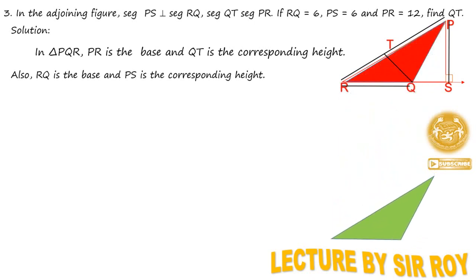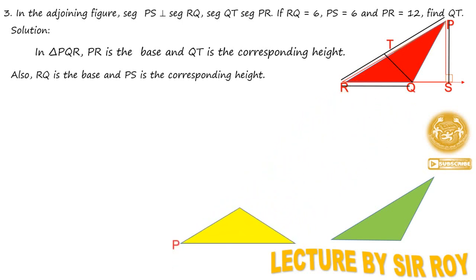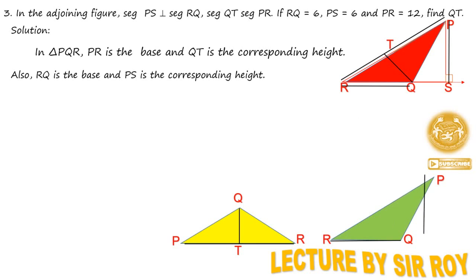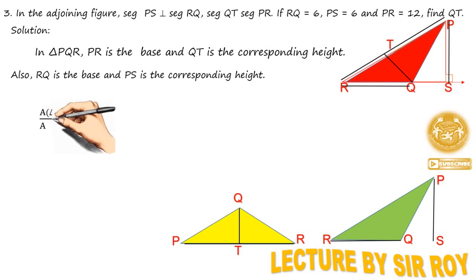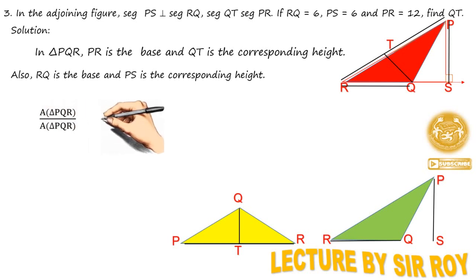इसी obtuse triangle को मैंने green color में नीचे लिया और उसे ज़रा करके acute angle बना दिया। Triangle P Q R — obtuse angle तो आपको पहले से दिख रहा था। Green triangle में base PR दिखाई दे रहा है और height QT। उसी triangle में RQ base दिखाई दे रहा है और PS height — PS एक imaginary है क्योंकि obtuse angle में tip point P है, तो हमें अलग से S लिखके उसका height denote करना पड़ता है।